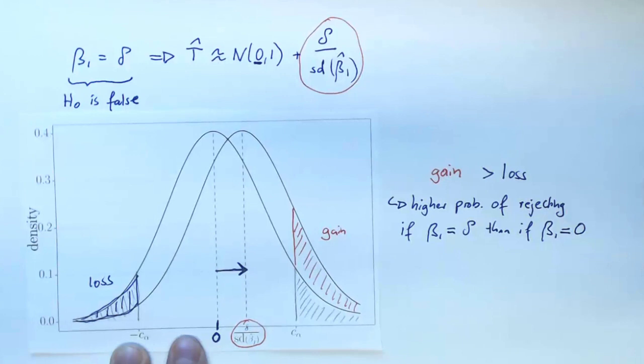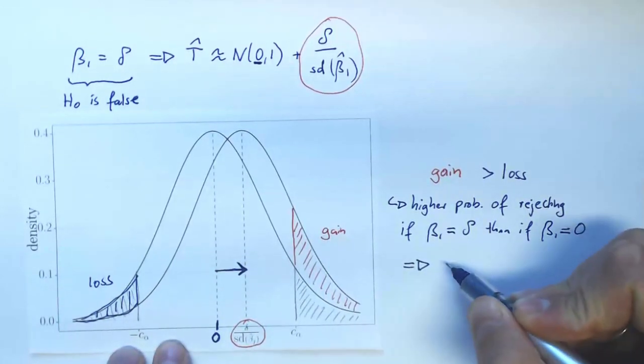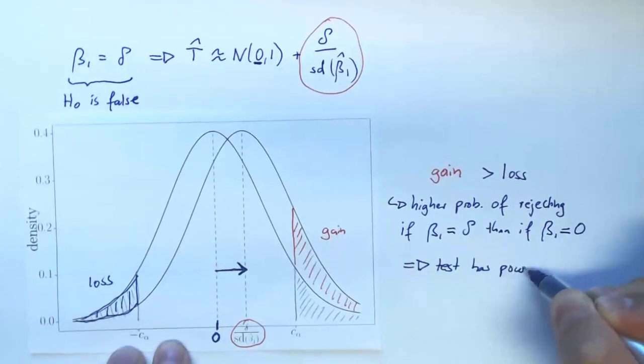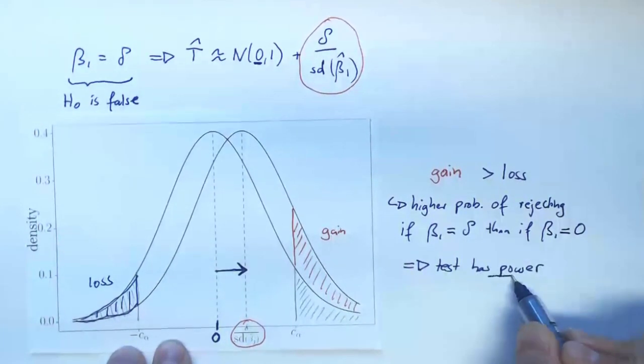And that is sort of a minimal property that we should demand of any test, that as soon as we move out of the null hypothesis, the rate at which we reject increases somehow. So this in a way means that we are able to detect violations of the null hypothesis. So whenever a test is able to do that, we also say the test has power.